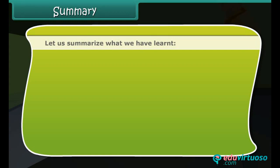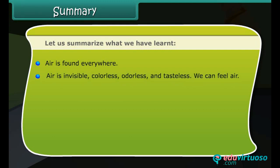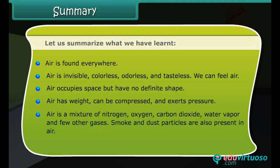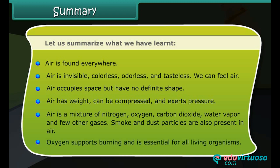Let us summarize what we have learned. Air is found everywhere. Air is invisible, colorless, odorless, and tasteless. We can feel air. Air occupies space but has no definite shape. Air has weight, can be compressed, and exerts pressure. Air is a mixture of nitrogen, oxygen, carbon dioxide, water vapor, and a few other gases. Smoke and dust particles are also present in air. Oxygen supports burning and is essential for all living organisms.